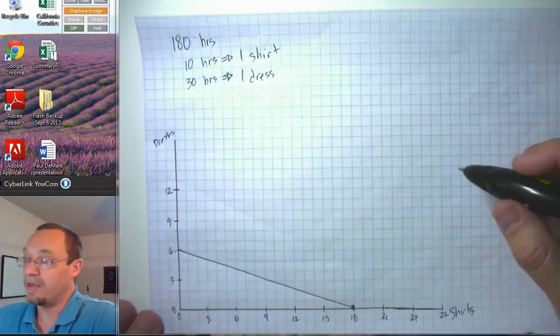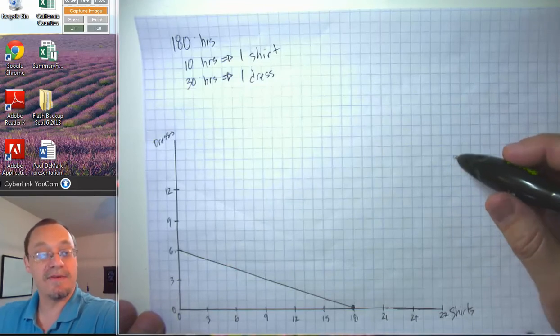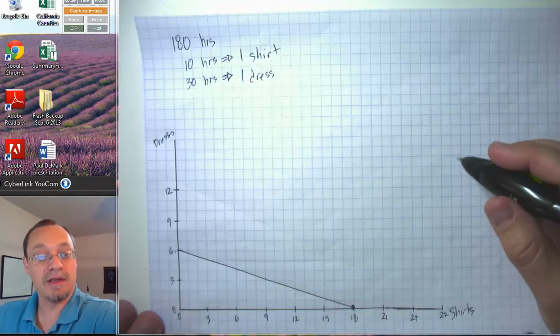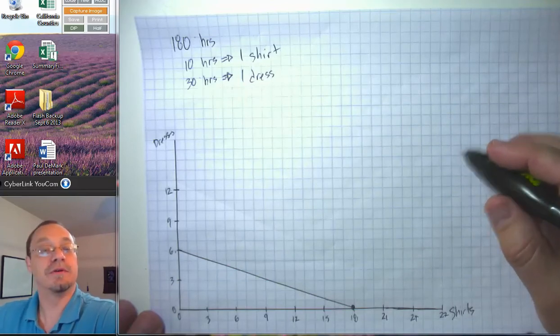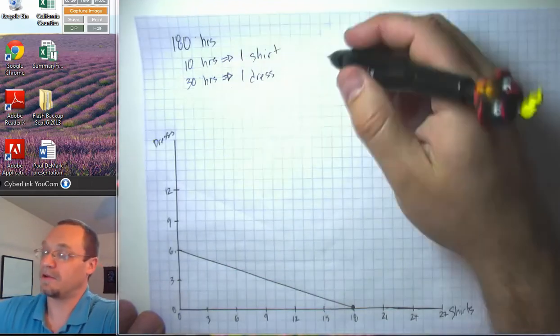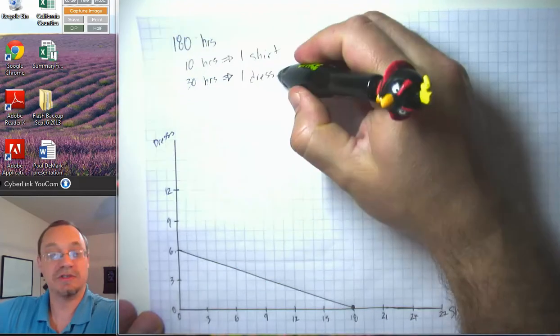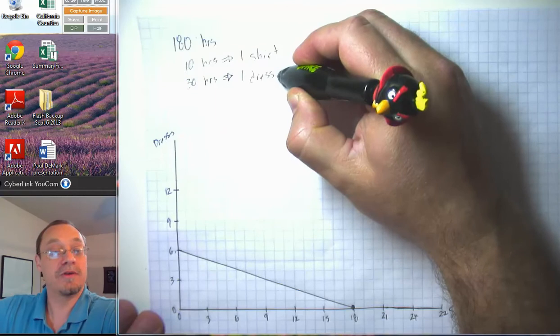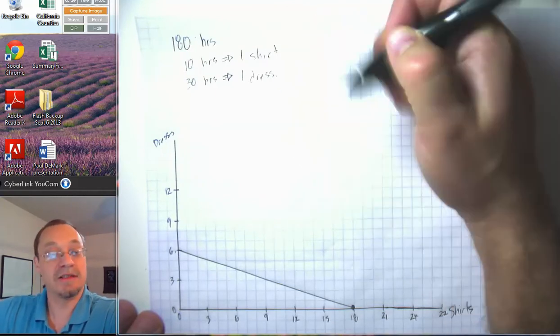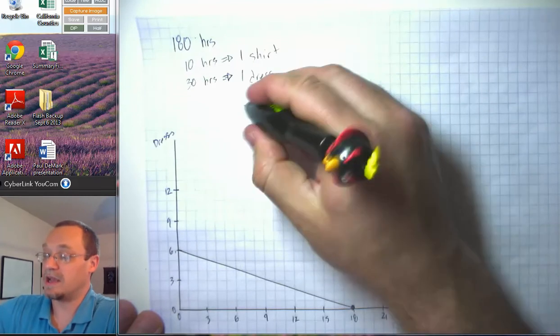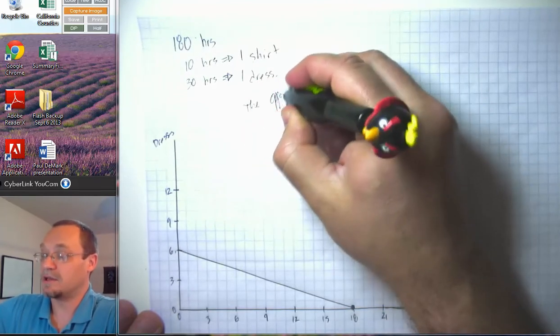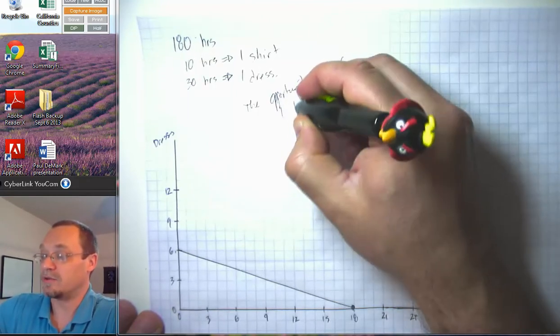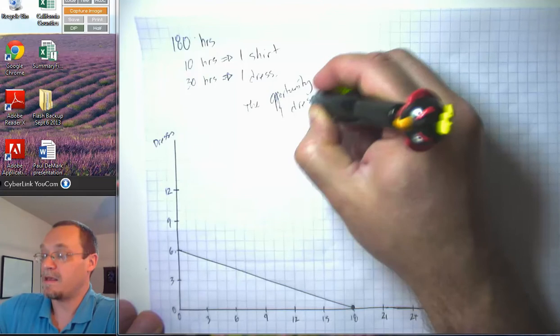So one thing to notice is we now have some information that allows us to compute the opportunity cost of a shirt or a dress. So in particular here, notice that every time we produce a dress, we have to take 30 hours. We could have produced three shirts in that 30 hours. So we can say the opportunity cost of one dress equals three shirts.